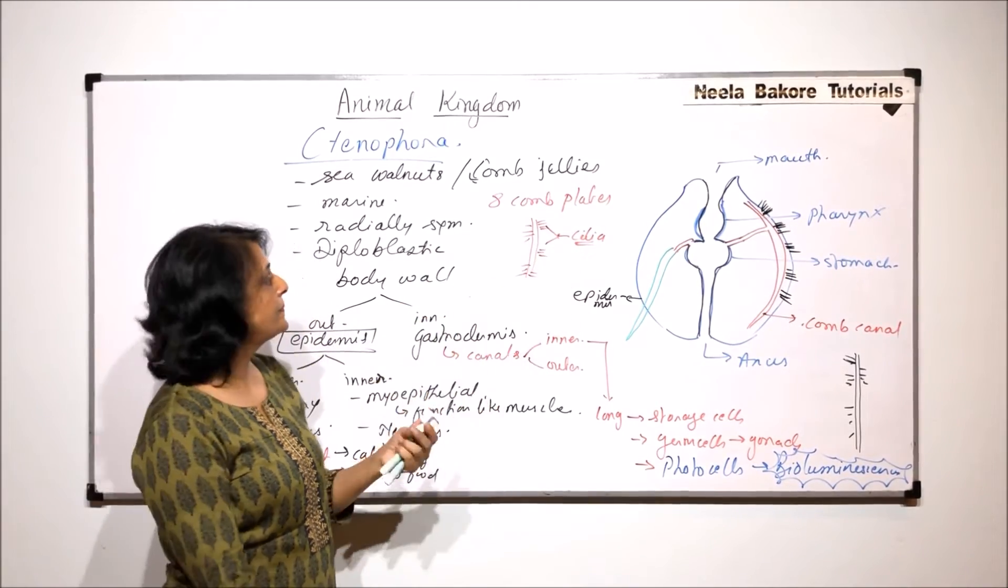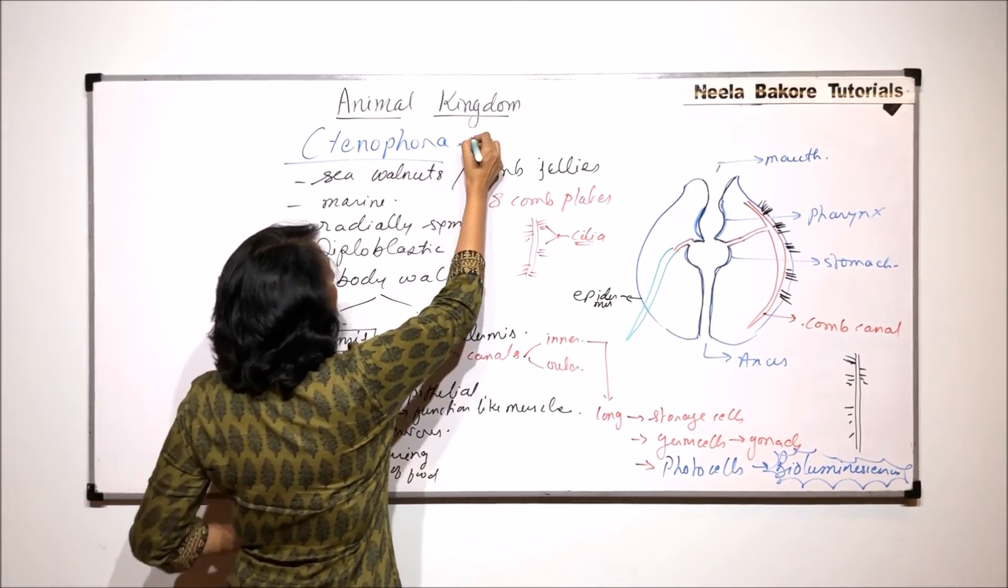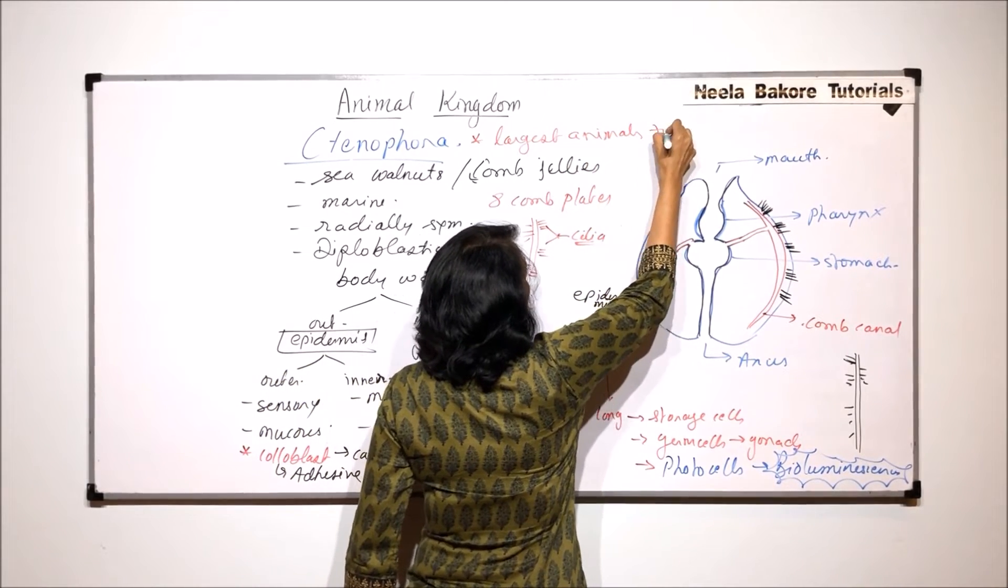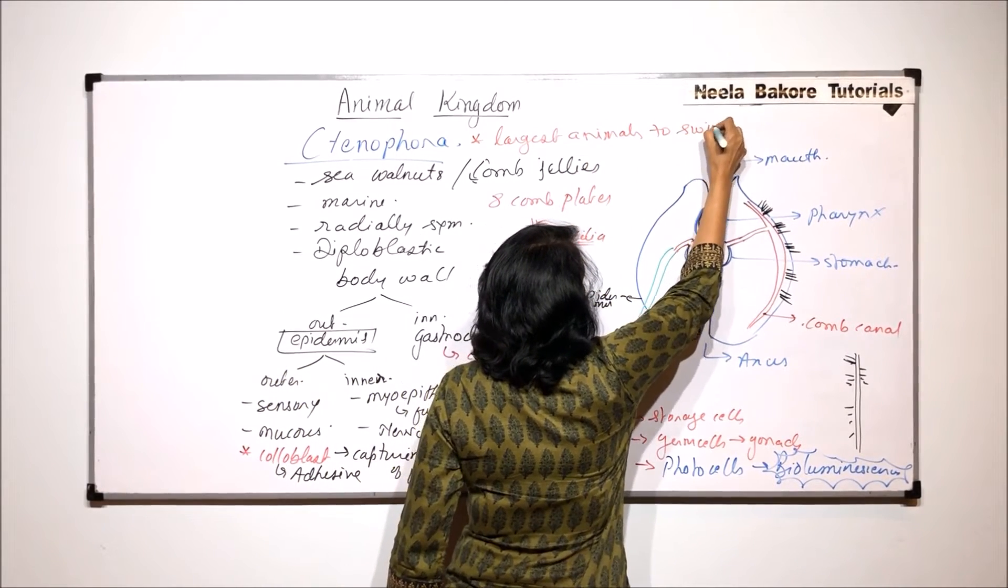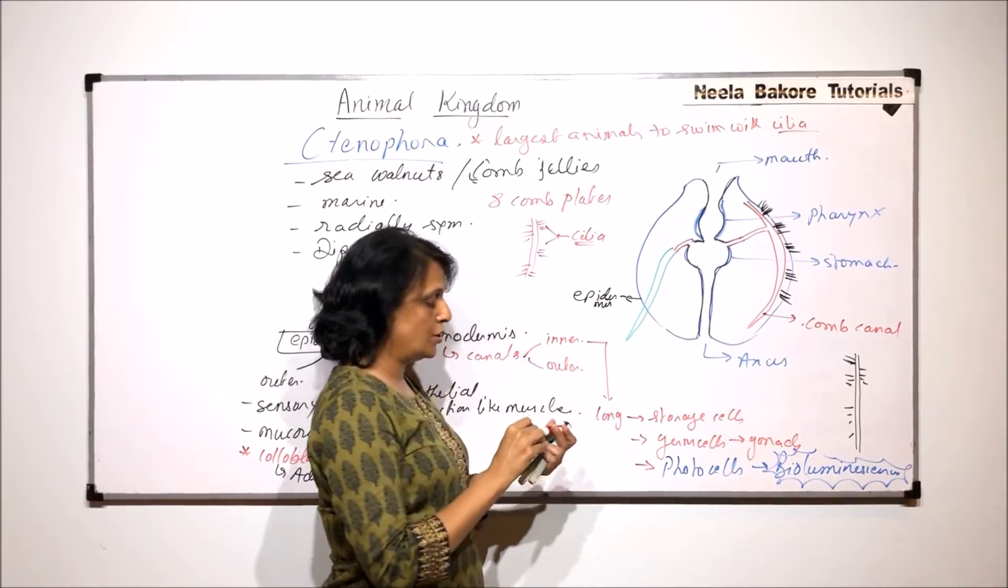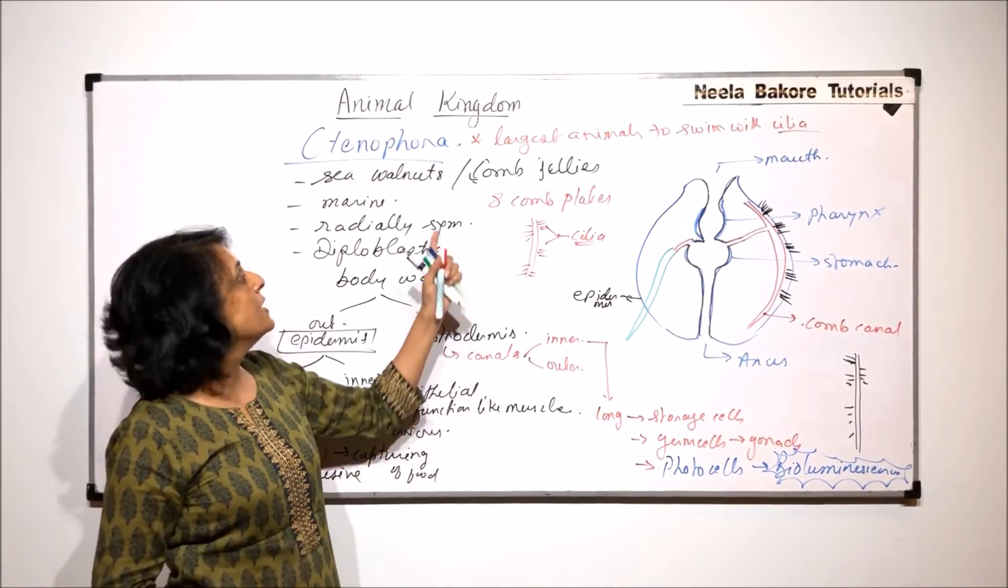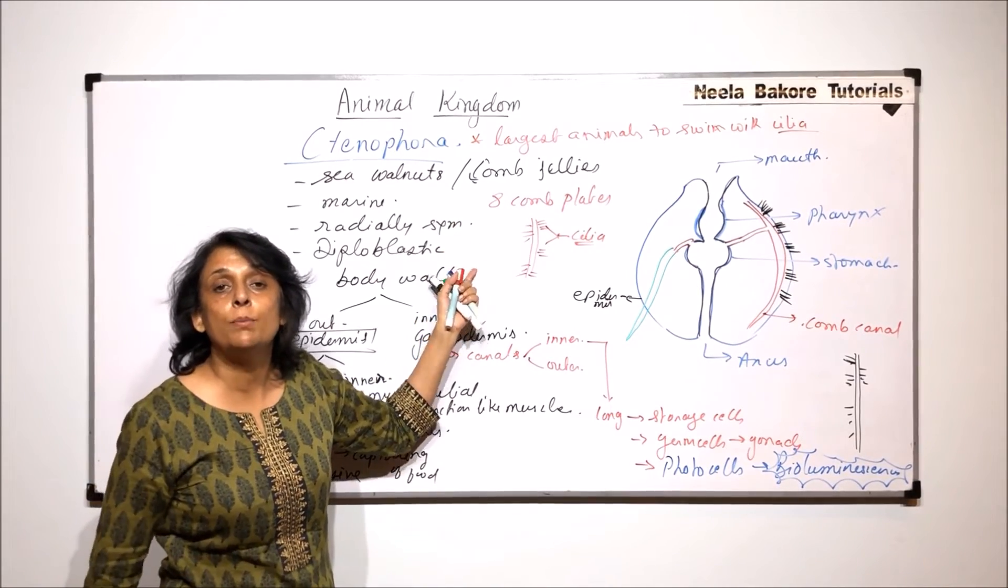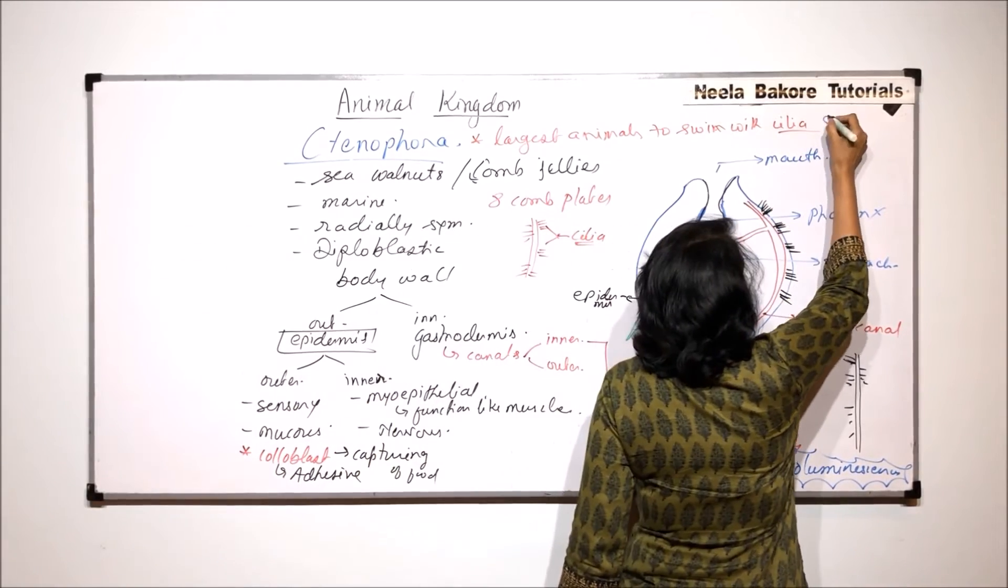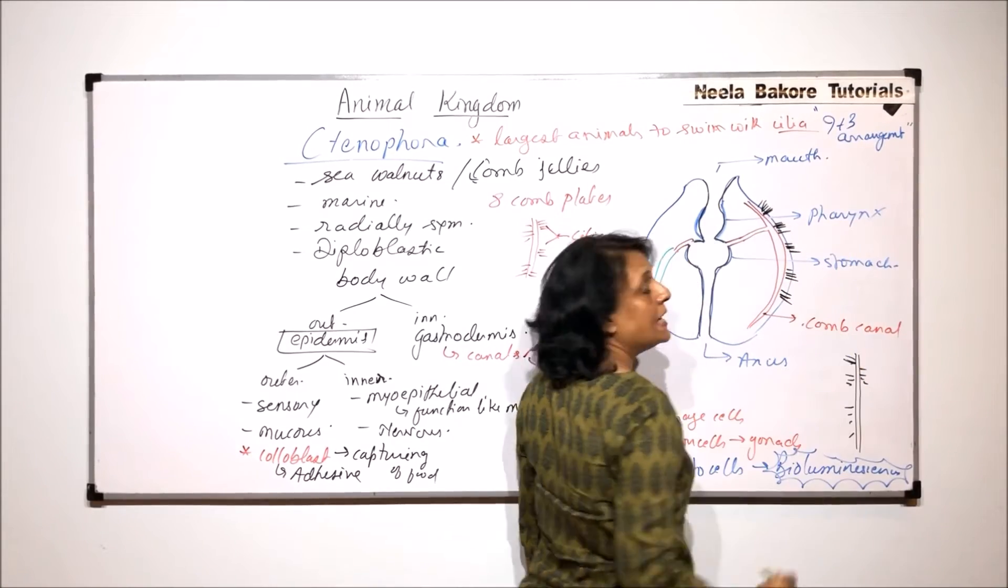Now coming to this cilia. Ctenophorans, that means these animals, are the largest animals to locomote or to swim with cilia. Normally cilia are the structures which are locomotive structures in lower animals or lower organisms. These are the largest animals which are swimming with the help of these cilia. And the cilia show nine plus three arrangement. So this is again very unique.